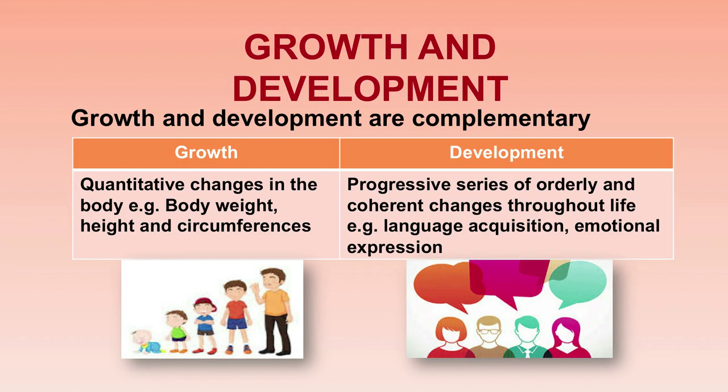Development is a progressive series of orderly and coherent changes throughout life, like language acquisition and emotional expression. See the child who is fearful — how he or she looks — and when playing, how he or she looks. There is emotional expression, and with age it keeps changing. Growth may stop at a certain age, but development keeps on changing throughout life.